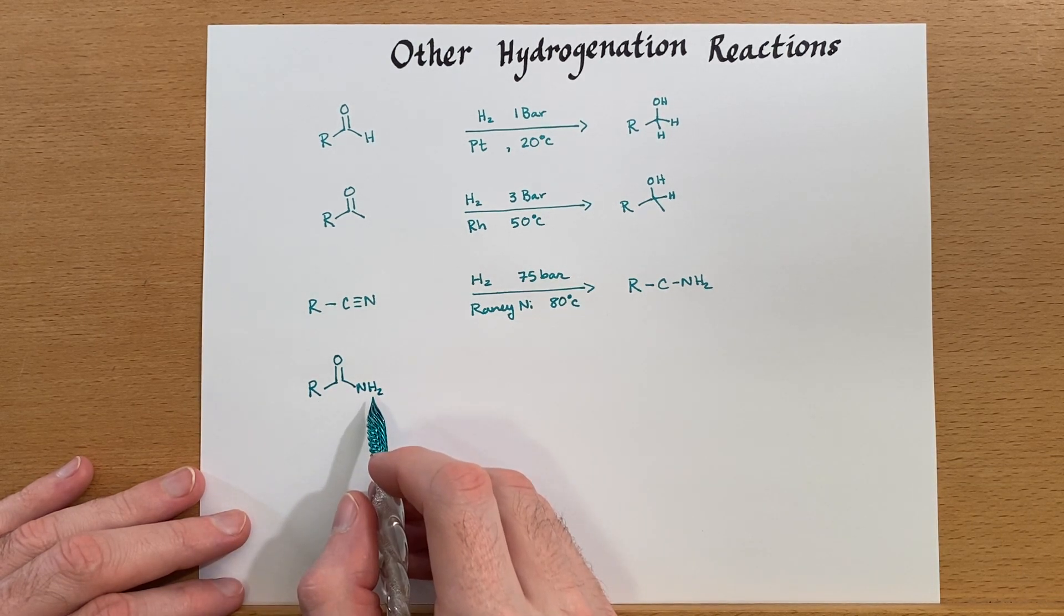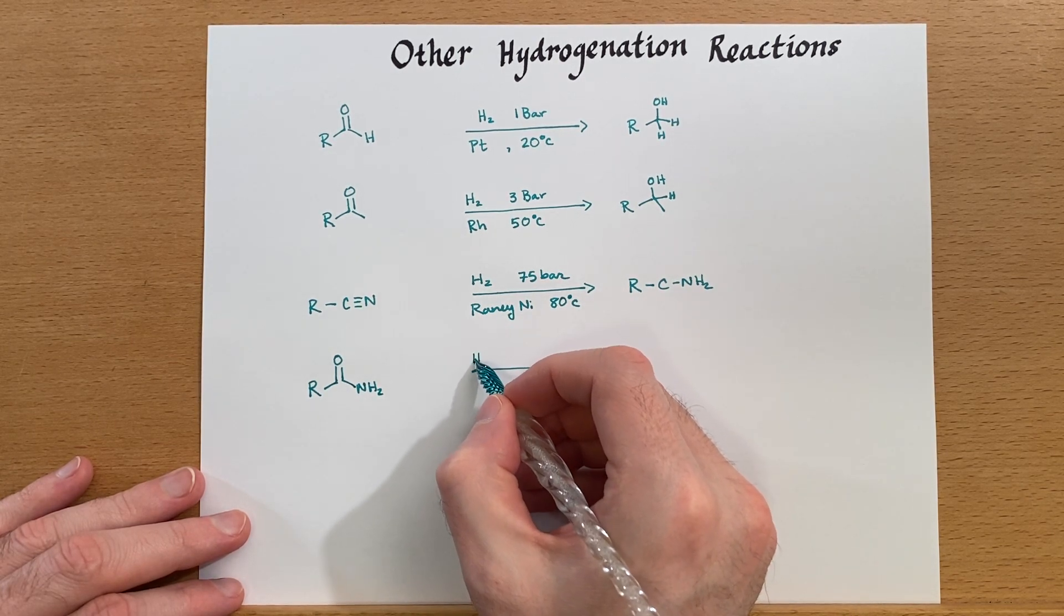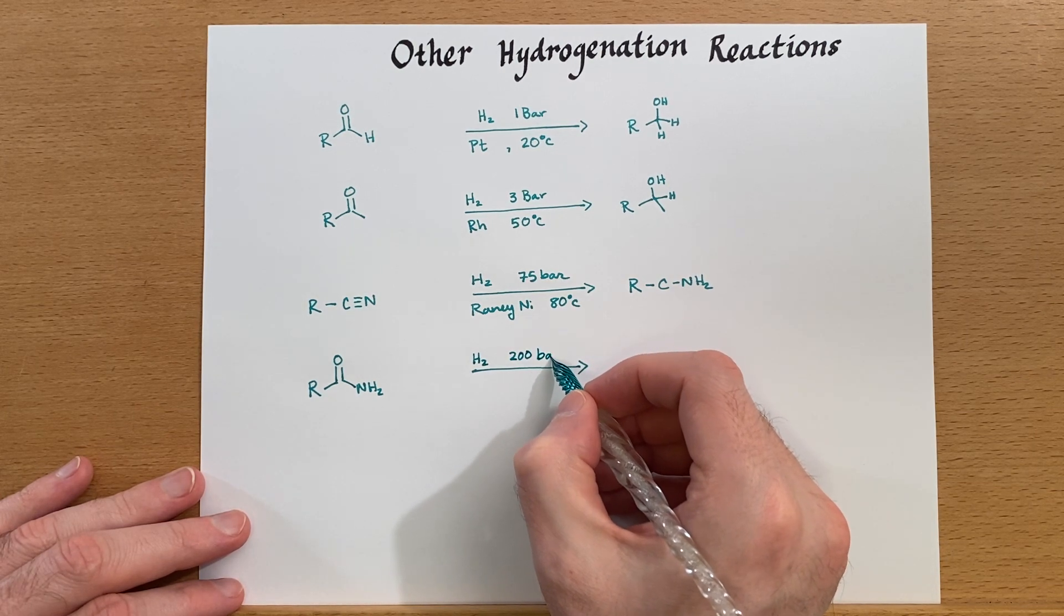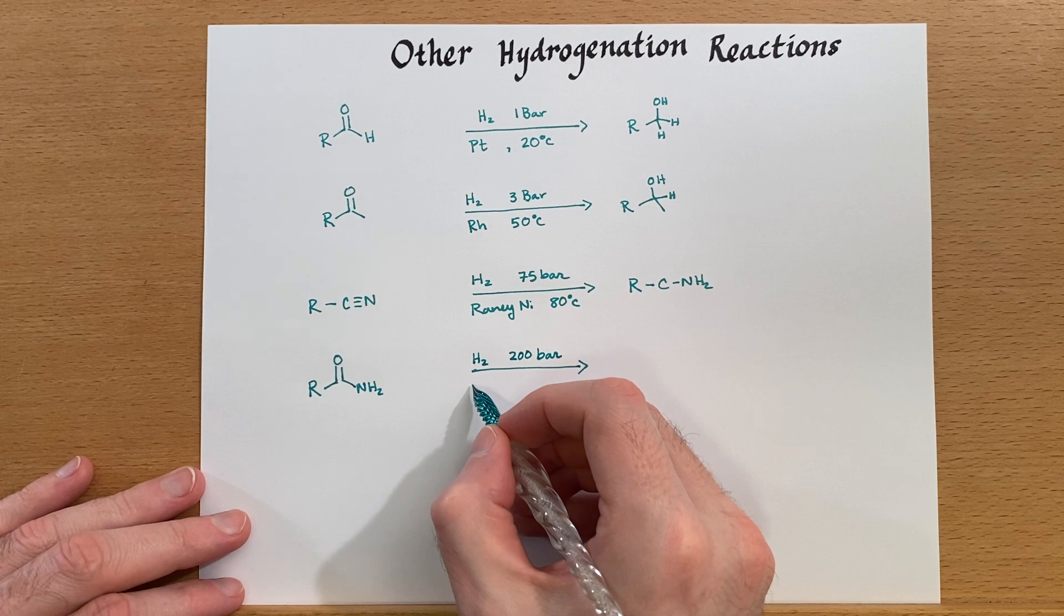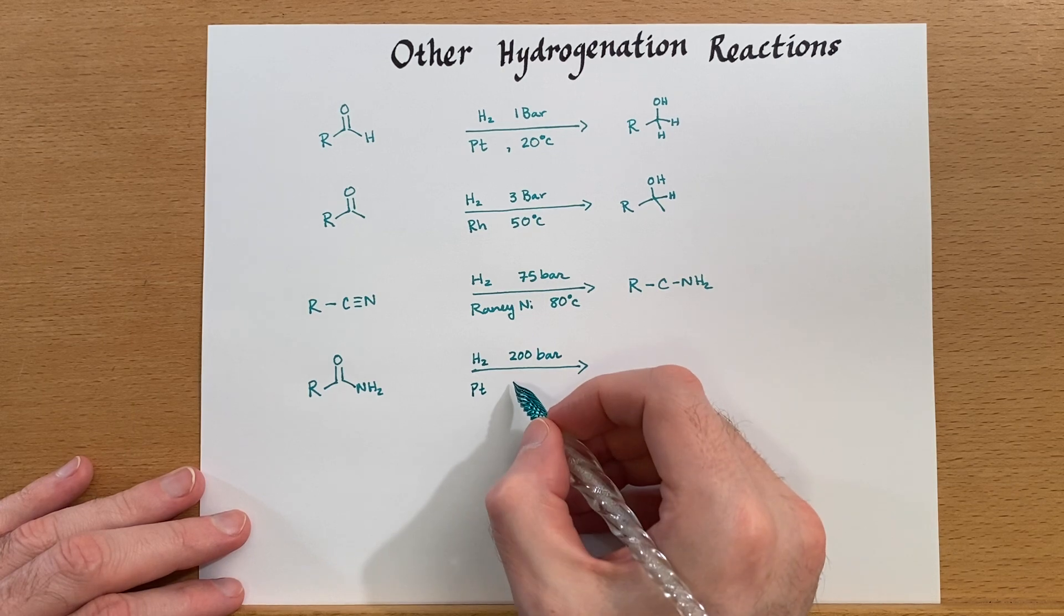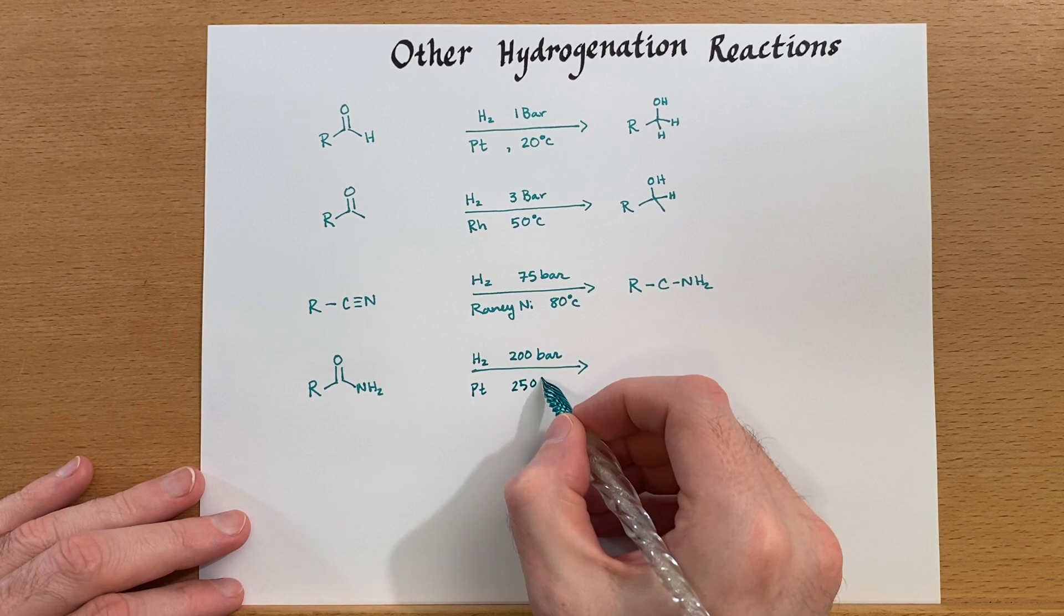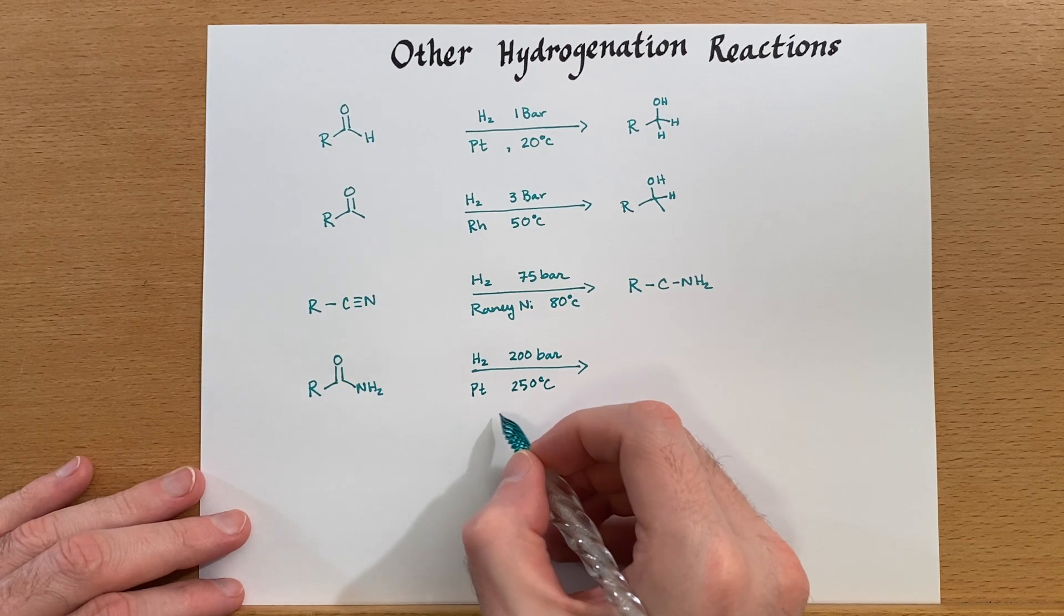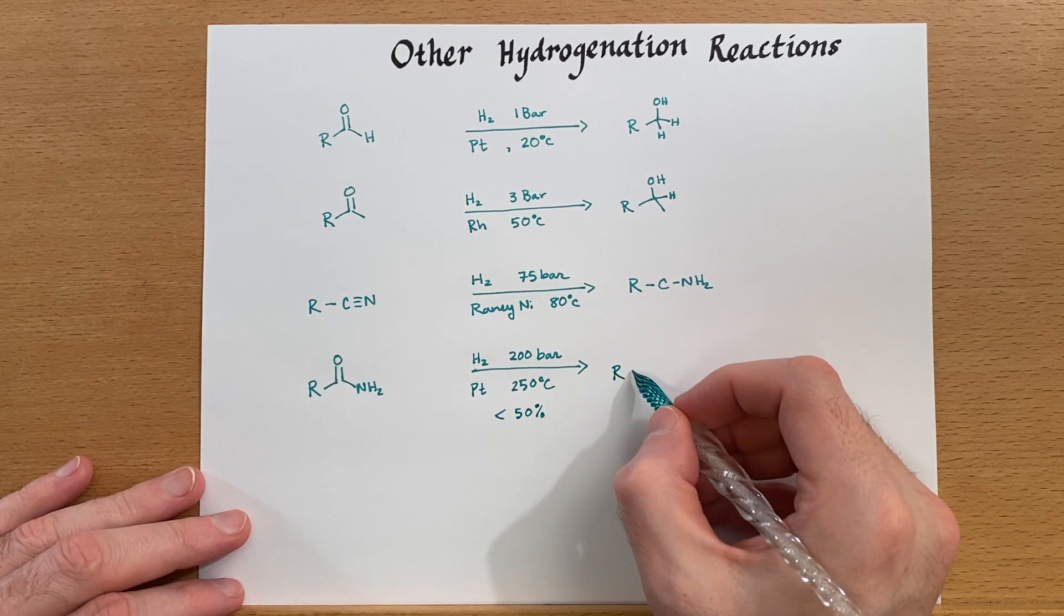And how about amides? Here we have a primary amide and these are quite difficult to reduce. We're going to need 200 bars of pressure, which is getting a lot higher now. It's possible to do that, we just need a steel container, and we're going to have to go much higher in temperature. Furthermore, the yields are going to be poor, and we'll talk about why in just one second.